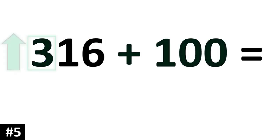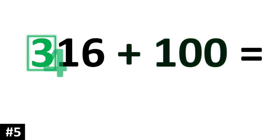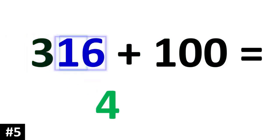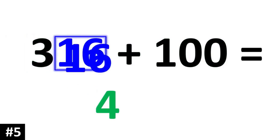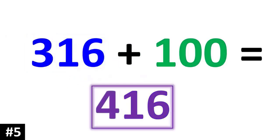The hundreds digit 3 is going to become a 4. The other numbers stay the same, so bringing down the 16, the answer is 416.